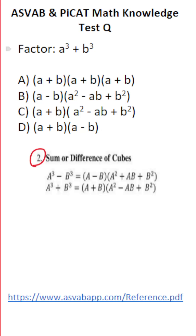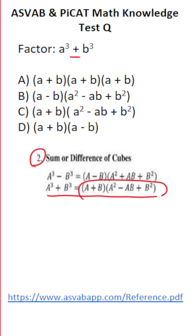In this case, we have the sum of two cubes. So when we factor it, it's going to look like this. The only difference between this and my factoring guide is this is lowercase, this is uppercase.